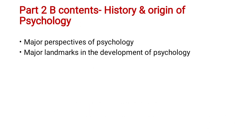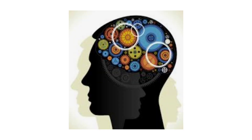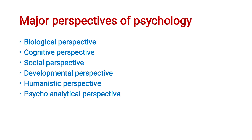Let's move on to the contents. In this Part 2B video, we are going to discuss History and Origin of Psychology — specifically, major perspectives of psychology and major landmarks in the development of psychology. There are six major perspectives in the field of psychology: biological perspective, cognitive perspective, social perspective, developmental perspective, humanistic perspective, and psychoanalytical perspective. Let us see them one by one.